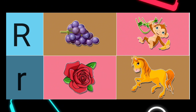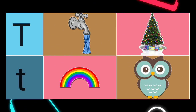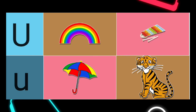R is for. Right answer: R is for Rose. S is for. Right answer: S is for Sun. T is for. Right answer: T is for Tap.